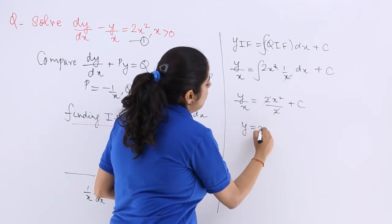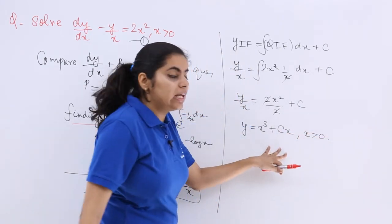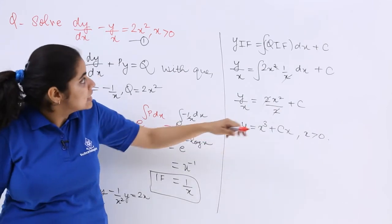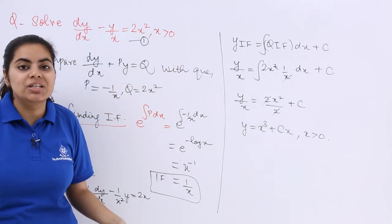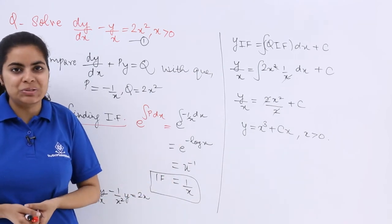So what should be the answer? y = x³ + cx where x > 0 should be the answer. Why x > 0? Because in the question itself it was written as x greater than 0. So this is how you do this type of a question.